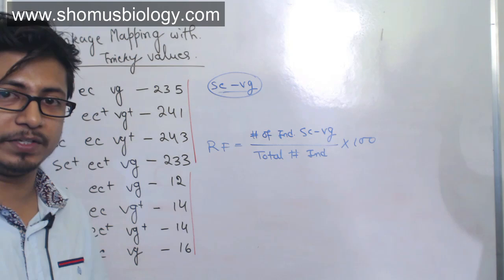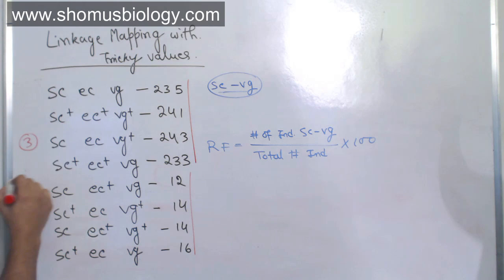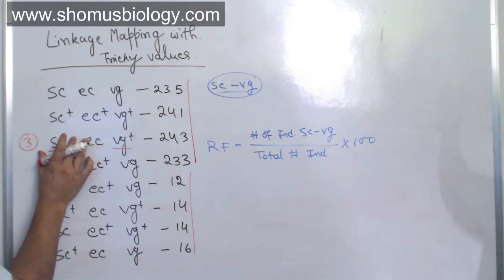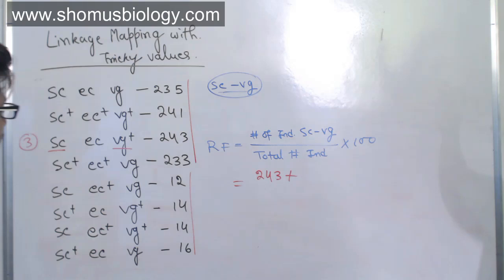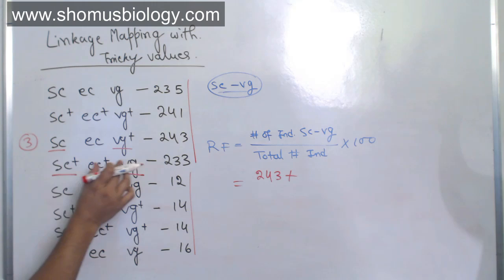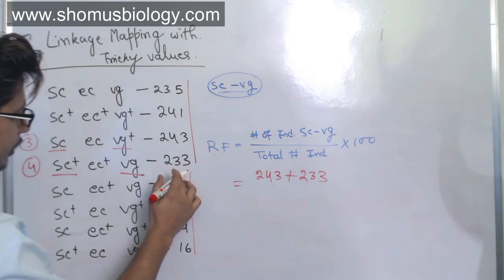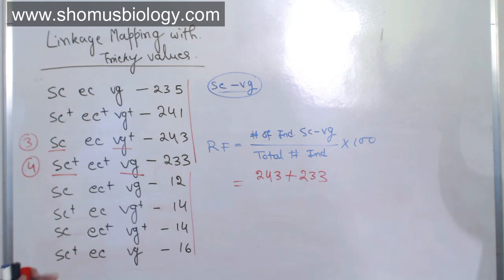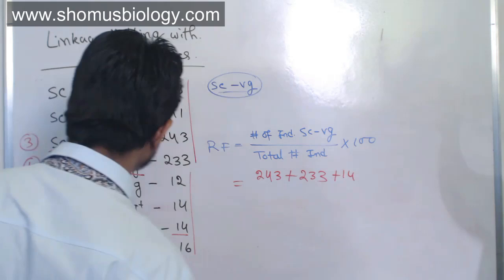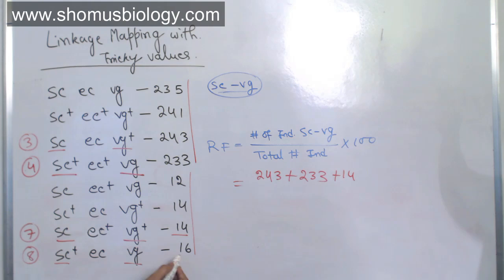The third genotype: SC is non-plus but VG is plus — different — so we take this as a recombinant type. The fourth: SC is plus and VG is non-plus — also different — so we take that as well, with 233 individuals. Continuing through the dataset, entries seven and eight are different: 14 individuals and 16 individuals respectively are recombinant. So we sum all the recombinant individuals.